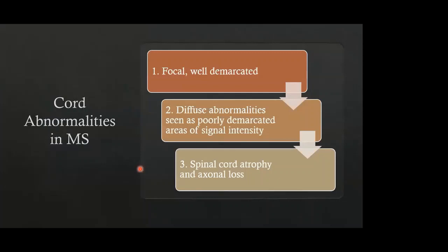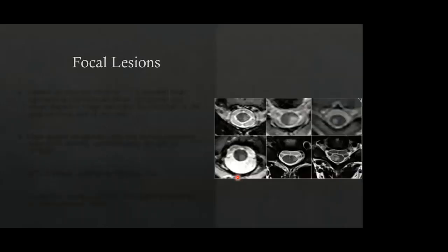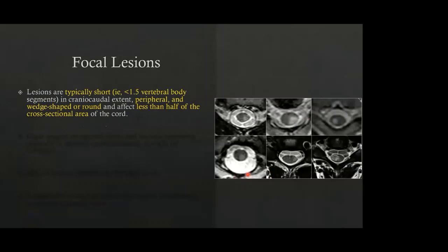In MS, there are three types of cord abnormalities. The focal well-demarcated lesions are the most commonly observed. There are also diffuse abnormalities seen as poorly demarcated areas of spinal cord abnormality. Third is the atrophic or axonal loss phase. The focal lesions are typically short segment — less than 1.5 vertebral body segments in craniocaudal length — and peripherally located, either wedge-shaped, rounded, or triangular, spanning less than half of the cross-sectional area of the cord.